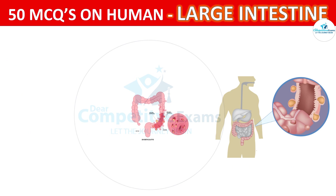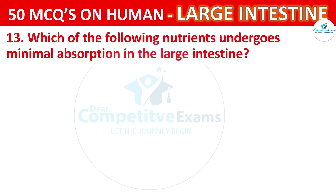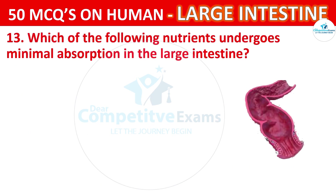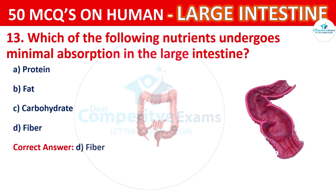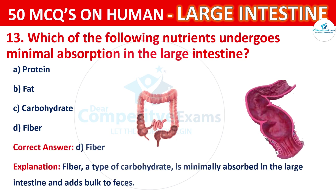Question number 13. Which of the following nutrients undergoes minimal absorption in the large intestine? The correct answer is D, that is Fiber. Fiber, a type of carbohydrate, is minimally absorbed in the large intestine and adds bulk to feces.